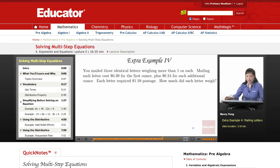Let's try setting up an expression. You mailed three identical letters weighing more than one ounce each. Mailing each letter cost 39 cents for the first ounce, plus 24 cents for each additional ounce. Each letter required $1.59 postage. How much did each letter weigh?